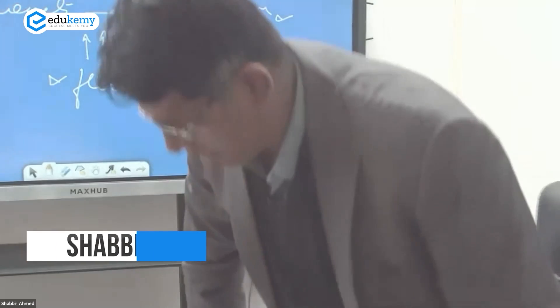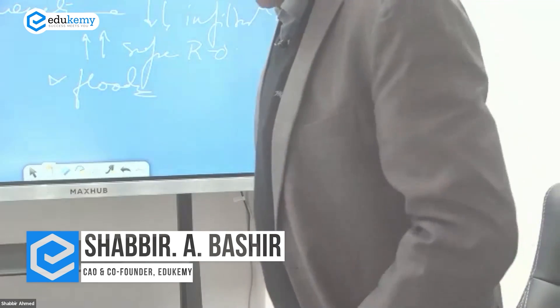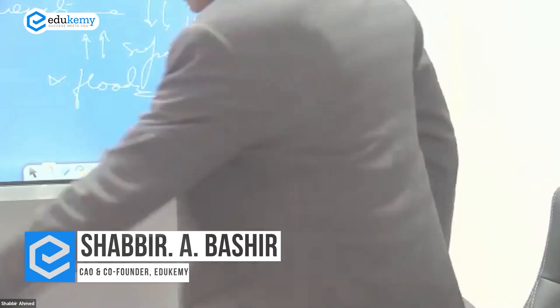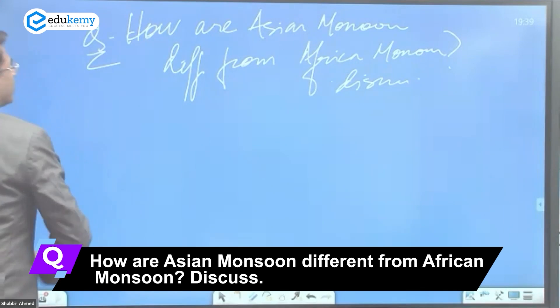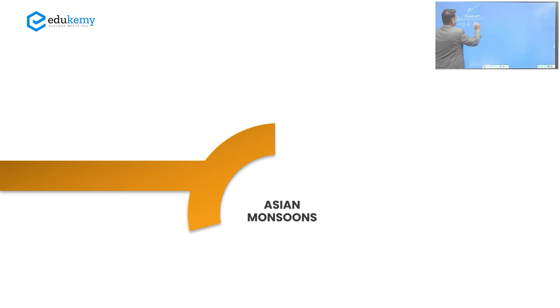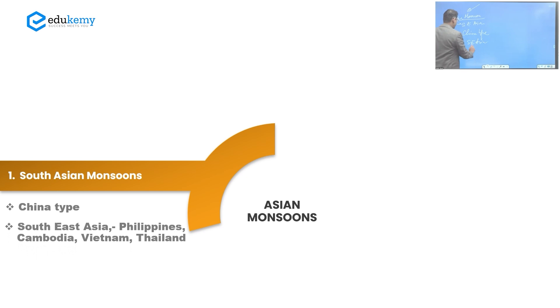How are Asian monsoons different from African monsoons? Discuss. Before we write down Asian monsoons, what will come? South Asian monsoon, China type, and you might write about Southeast Asia which is Philippines, Cambodia, Vietnam. And African monsoons - one is Gulf of Guinea or one is East African.